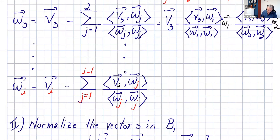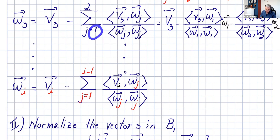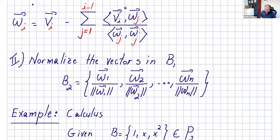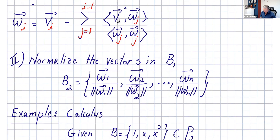So any vector V sub i can be written as V sub i minus the sum from j equals one to i minus one of the orthogonal projections. You do it one by one and at the end add them — although it's subtraction, you can add all of them and subtract. Once you find all the W's and normalize them, you get B2, which is the orthonormal basis you wanted to find.